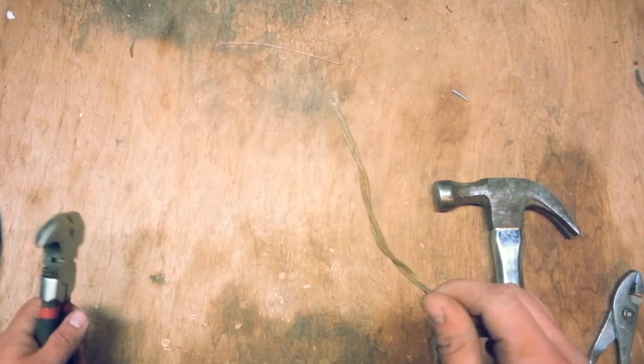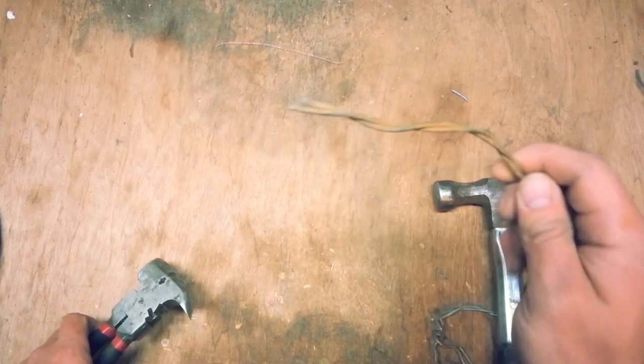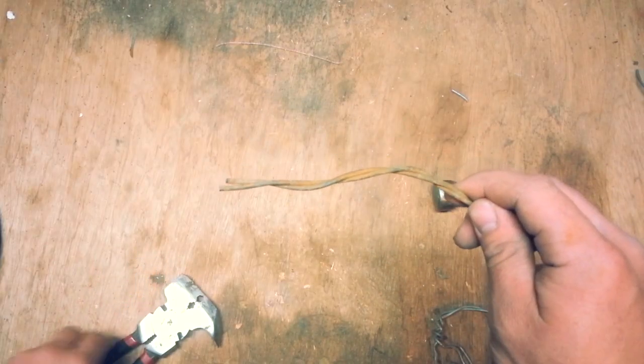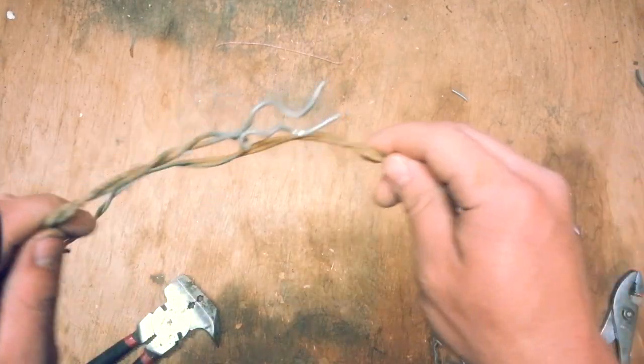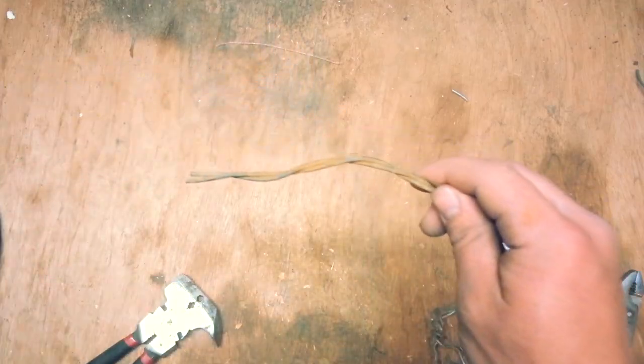So another thing these pliers are good for is splicing two broken wires together. So if you're fixing fence and you have your two wires, you've stretched them and they will now meet. You need to make a splice.